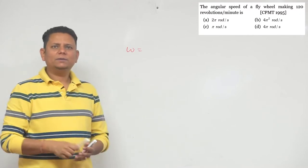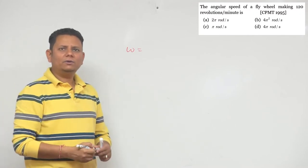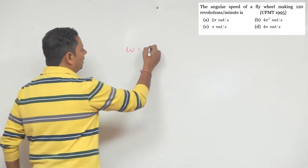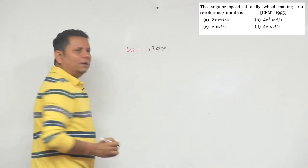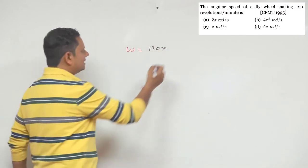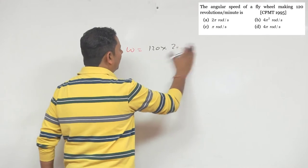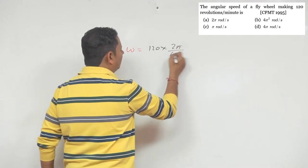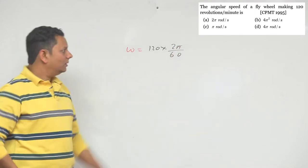The data given to us is 120 revolutions per minute. So omega will be equal to 120 multiplied by 2π divided by 60. Calculating 2π divided by 60, you will get omega.